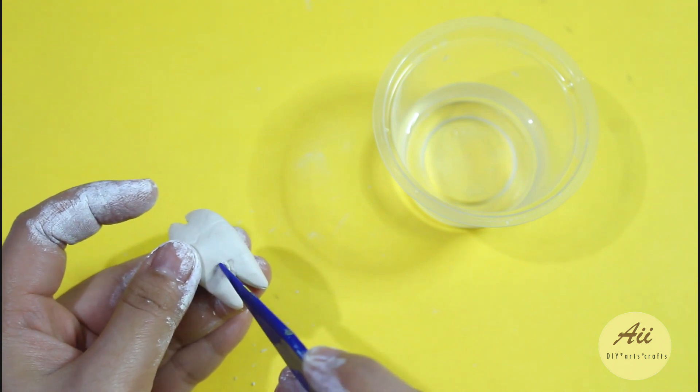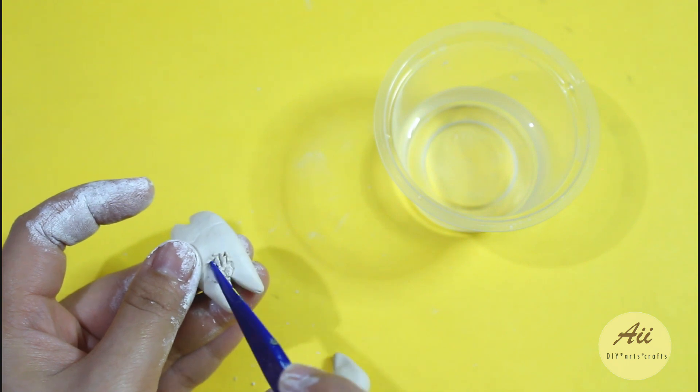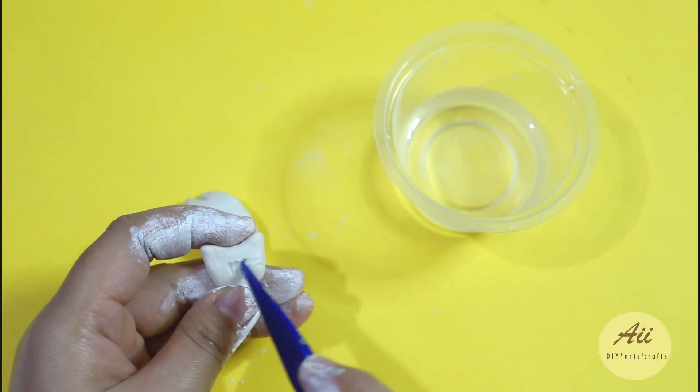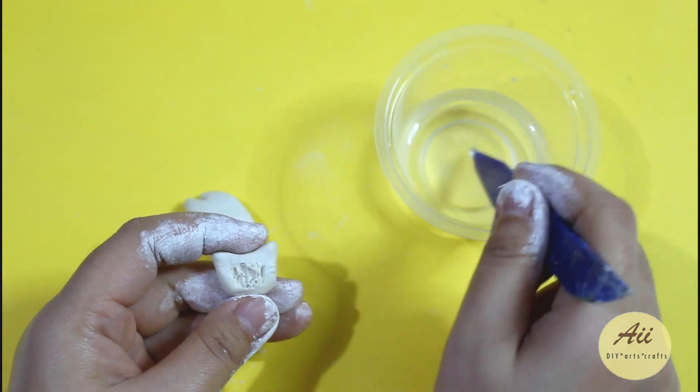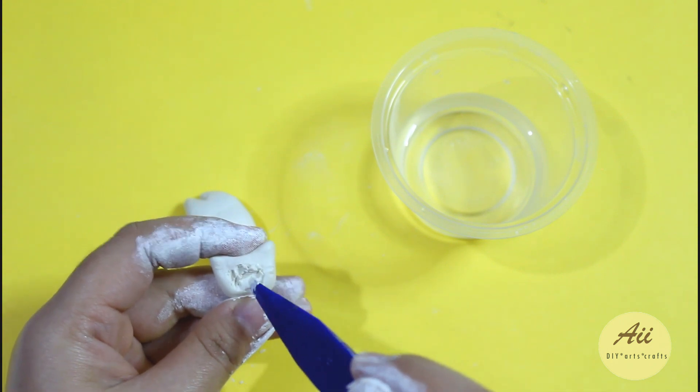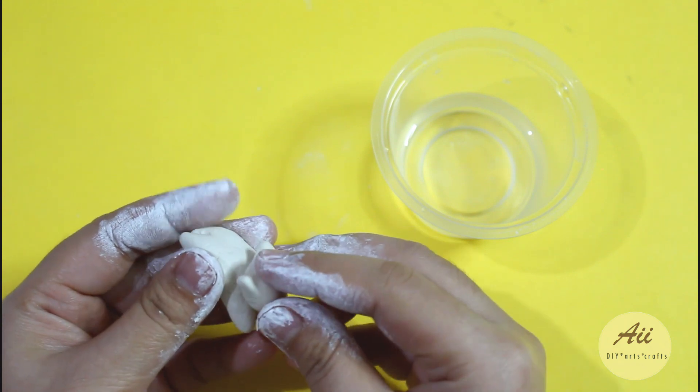Using any pointed tool create some rough textures where you're going to attach the pieces together. This way the clay binds together instead of using any glue to fix it. If the clay is starting to harden you can also use a little bit of water to soften the clay. Don't expose the clay in air for too long or it will start to dry making it hard to reshape it.